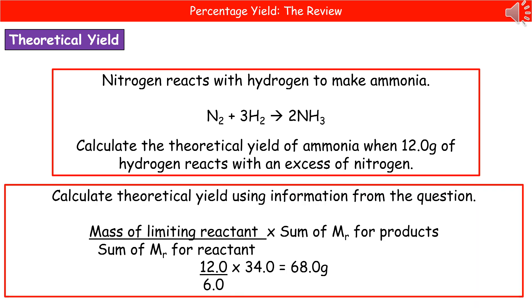The last thing to do to calculate your theoretical yield is go back to get the information from the question. So we know that 12 grams of hydrogen is reacting. That's our limiting reactant. So we do the mass of limiting reactant divided by the sum of the relative formula mass for our reactant, and we times that by the sum of the relative formula mass for our product. So in this case, it's going to be 12 from the question divided by the 6 we worked out for our hydrogen on the previous slide, and then we multiply that by our ammonia, which was 34. And that gives us a total of 68 grams as our theoretical yield.